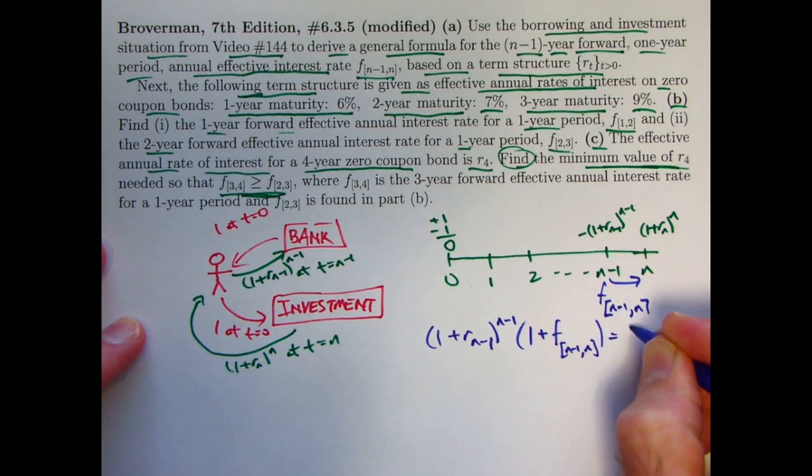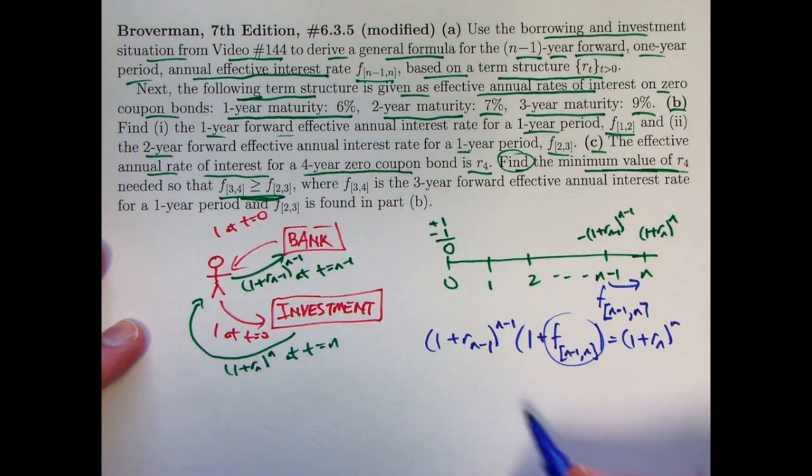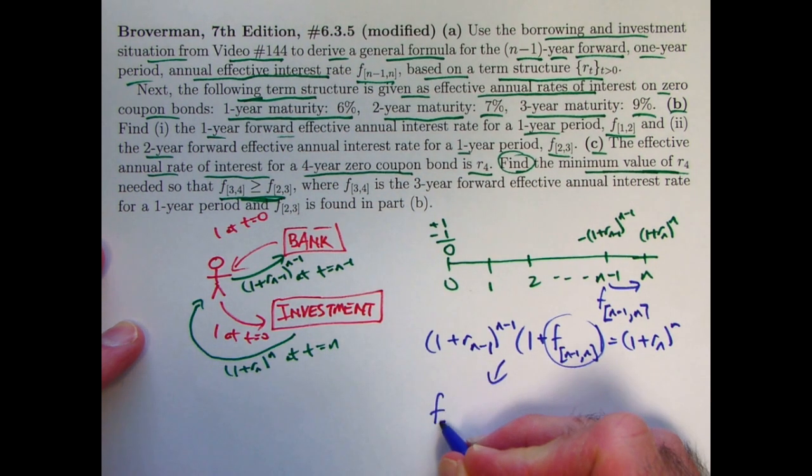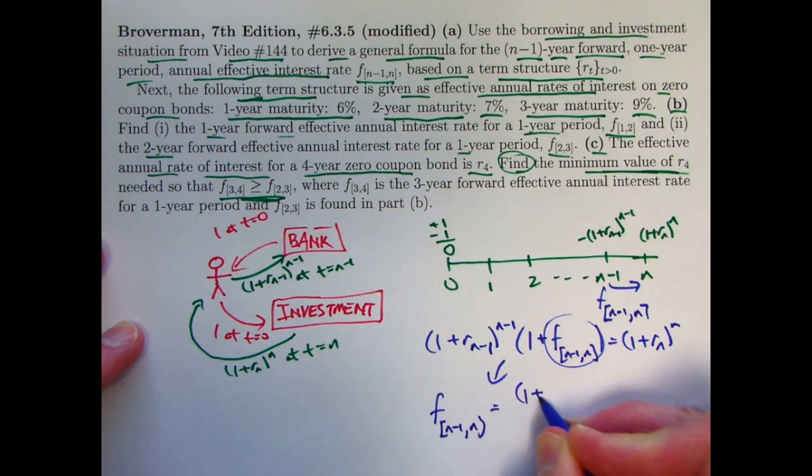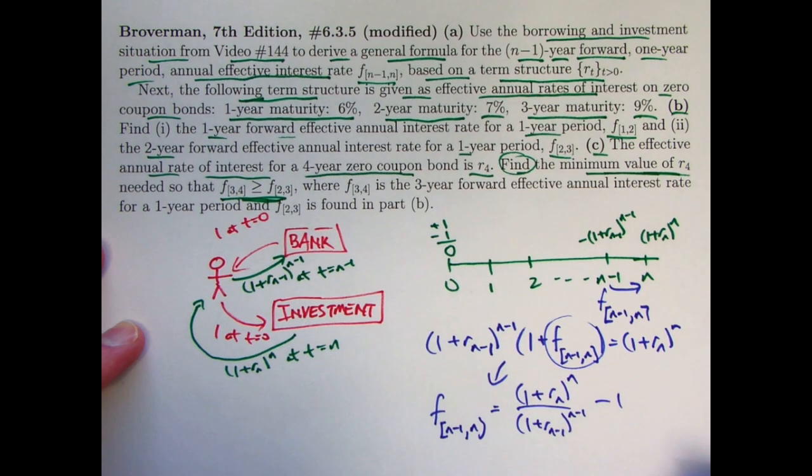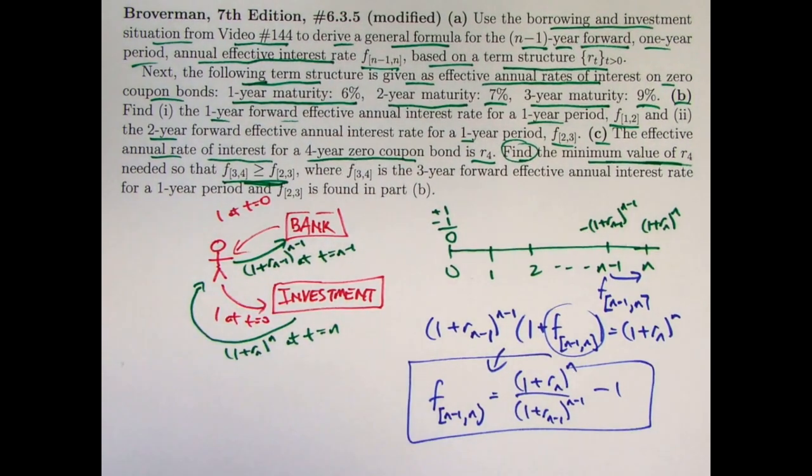And then we just solve this equation for the unknown forward rate, and we've done the derivation in part a. And it's a two-step solving process. First divide both sides by one plus r n minus one to the n minus one power, then subtract one. You could show the intermediate step if you like. The final answer is going to be one plus r n to the n divided by one plus r sub n minus one to the n minus one minus one. Okay, there is your general formula, and you can find that in the reading of Brogerman's book.